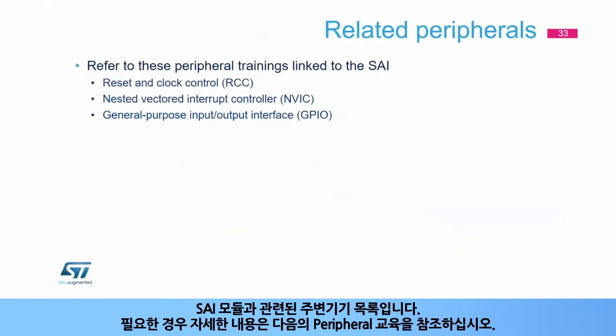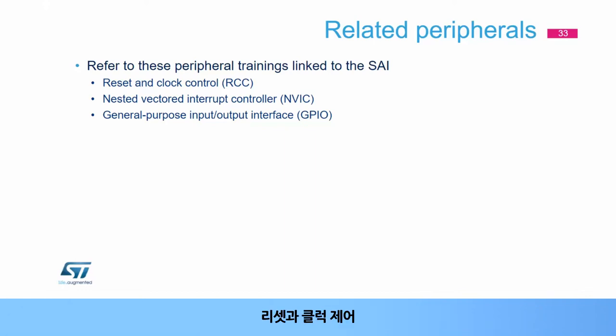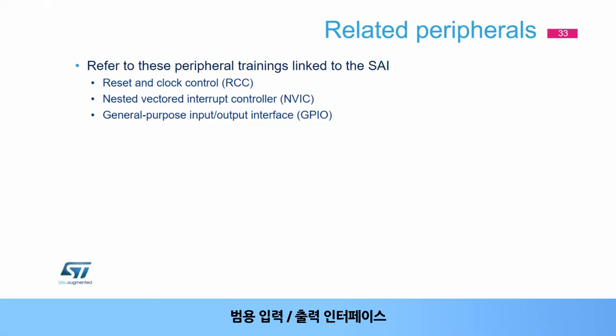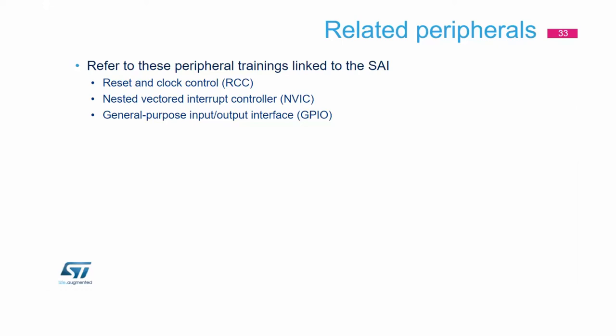This is a list of peripherals related to the SAI module: Reset and Clock Control, Nested Vectored Interrupt Controller, and General Purpose Input Output Interface. Please refer to these peripheral trainings for more information if needed.